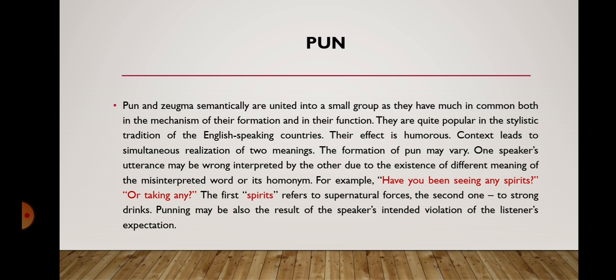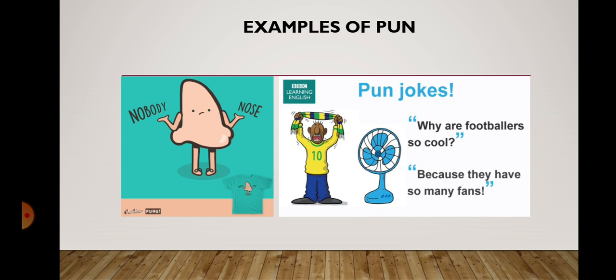Punning may also be the result of the speaker's intended violation of the listener's expectation. Here are some examples of pun. 'Like nobody nose' — the word 'nose,' which means part of the human face, is pronounced in the same way as the verb 'knows.' There are also many jokes based on pun, such as: 'Why are footballers so cool? Because they have so many fans.' The words 'cool' and 'fans' are polysemantic and here they are used in their two different meanings, and thus a joke appears.